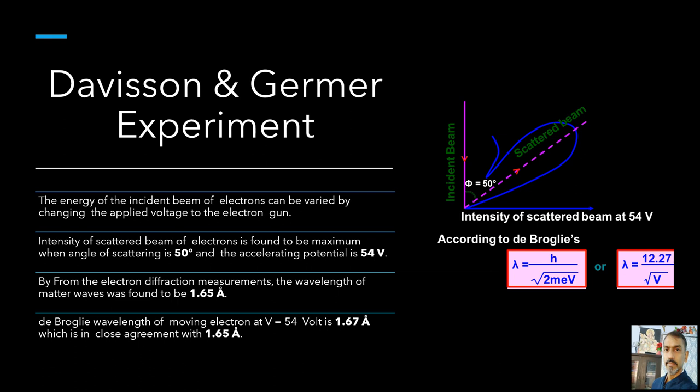From the electron diffraction measurements, the wavelength of matter waves was found to be 0.165 nanometer or 1.65 angstrom. The de Broglie wavelength associated with electrons using de Broglie equation at 54 volt is given by 0.167 nanometer or 1.67 angstrom. Thus, there is an excellent agreement between the theoretical value and the experimentally obtained value of de Broglie wavelength. The Davisson-Germer experiment thus strikingly confirms the wave nature of electrons and the de Broglie relation.